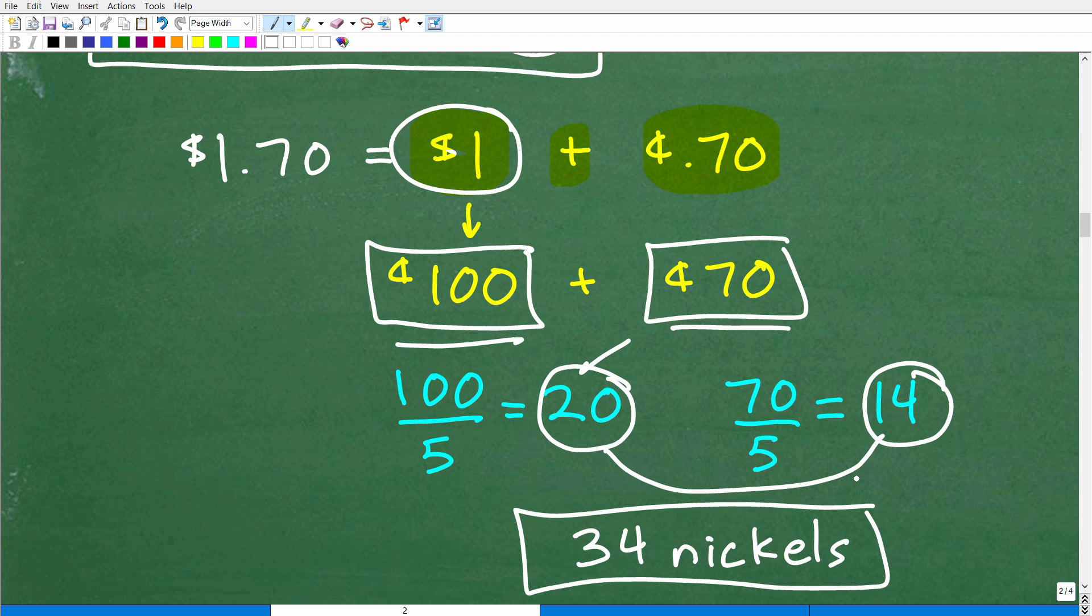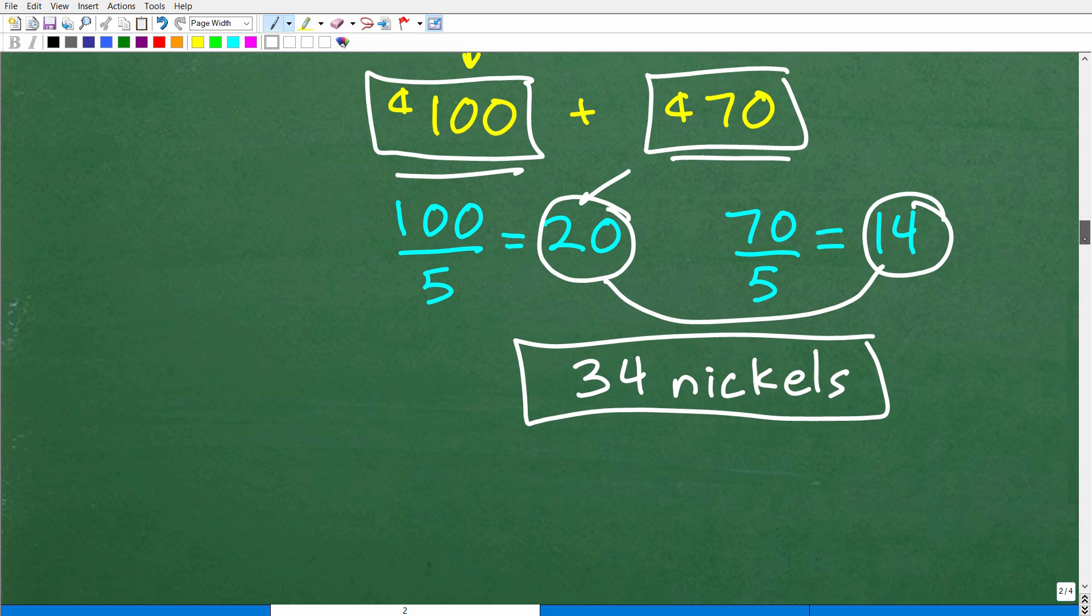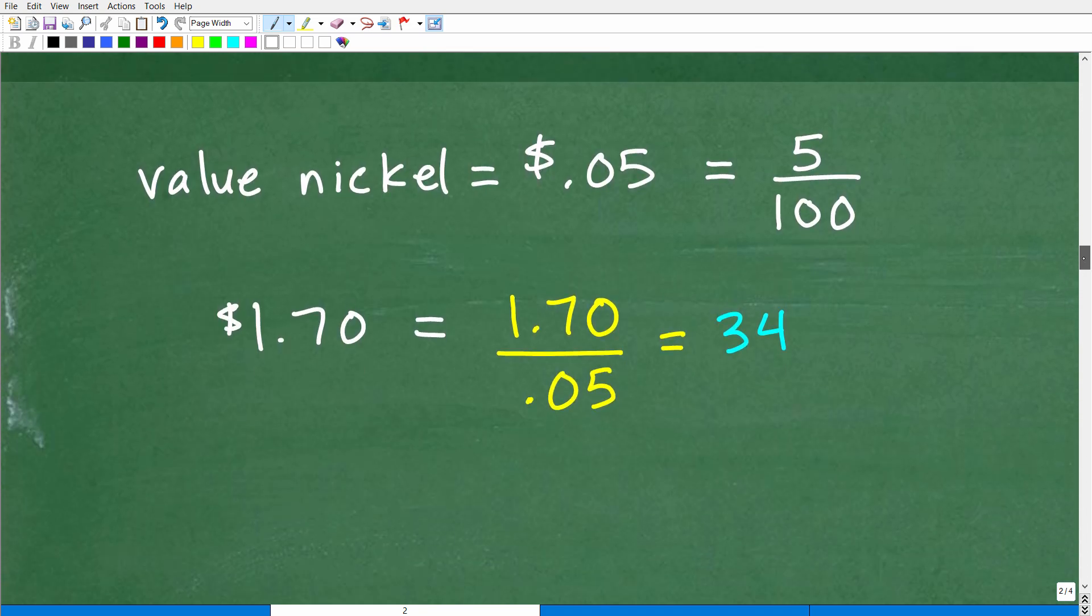So that's one way to reason through the problem. Again, you could have done this problem slightly different. It's perfectly fine. As long as you understand, you can kind of justify your conclusions. That is, that's really what counts in solving a math problem. So 34 nickels. But let's go ahead and look at this problem differently.